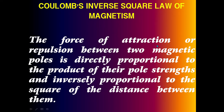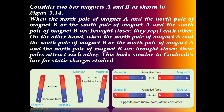The force of attraction or repulsion between two magnetic poles is directly proportional to the product of their pole strength and inversely proportional to the square of the distance between them. Now I am going to explain this law with the help of a diagram. Consider two bar magnets A and B shown in the figure. When the north pole of magnet A and the north pole of magnet B, or the south pole of magnet A and south pole of magnet B, are brought closer, they repel each other because same poles repel each other.